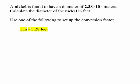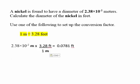Finally, we need to convert 2.38 times 10 to the minus 2 meters to feet. We'll use the conversion factor 1 meter equals 3.28 feet. Using dimensional analysis, we begin with 2.38 × 10⁻² meters multiplied by the conversion factor 3.28 feet over 1 meter, which gives us an answer of 0.0781 feet.